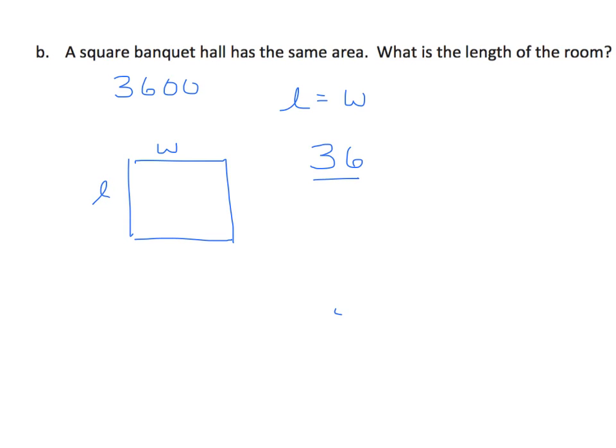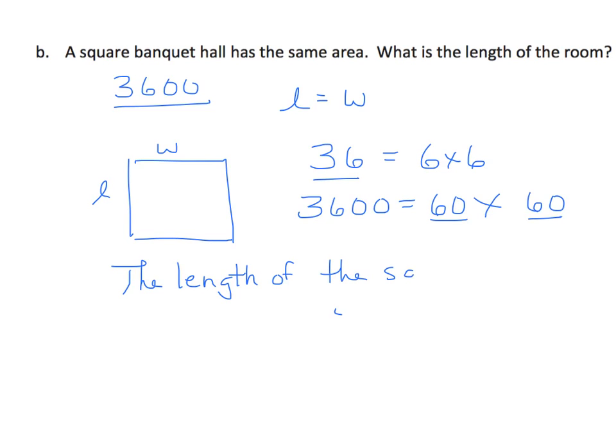Well, I've got this number 36, and I can find pairs of factors that are 36, right? But the factors need to be exactly the same. Okay, so what two numbers that are exactly the same equal 36? The answer would be 6 times 6. But now we have 3,600. So equals what times what? Well, we have 3,600. If I multiplied 60 times 60, I would get the 3,600. So the length of the square banquet hall is 60 meters.